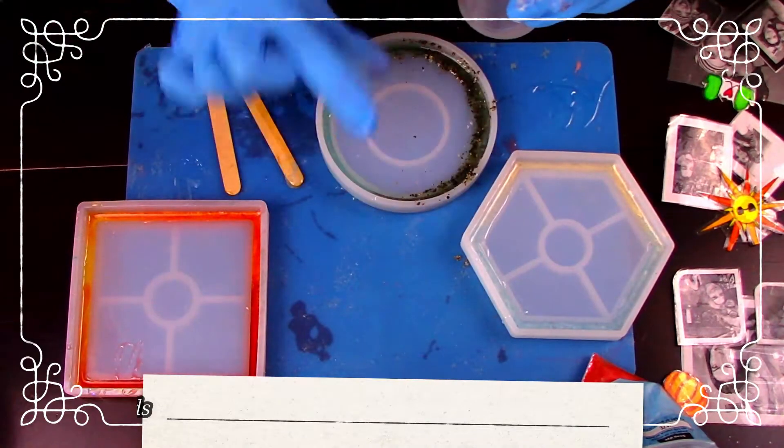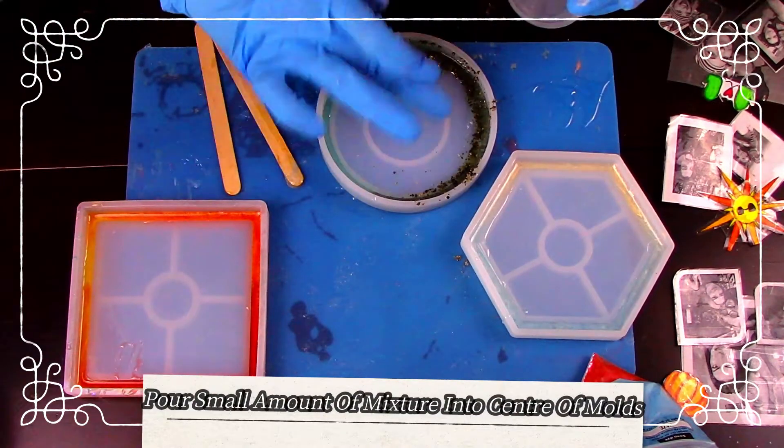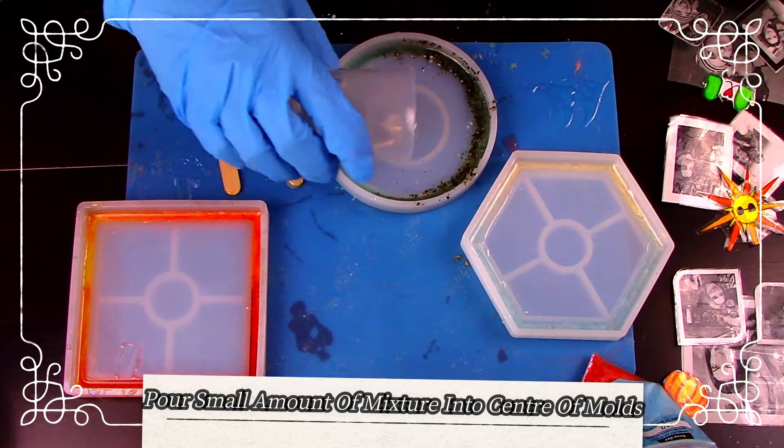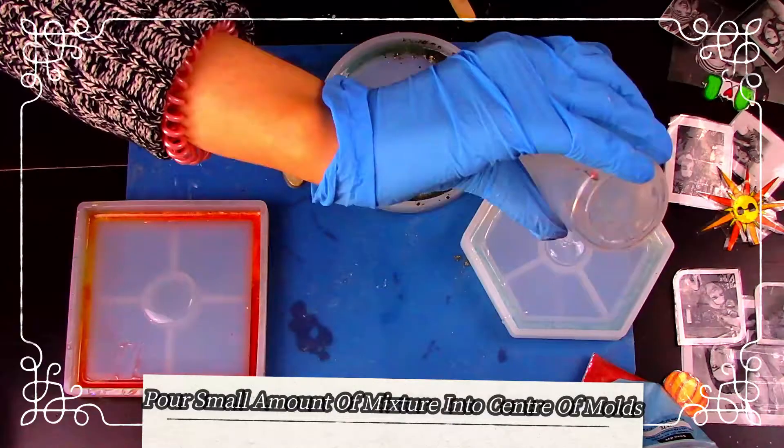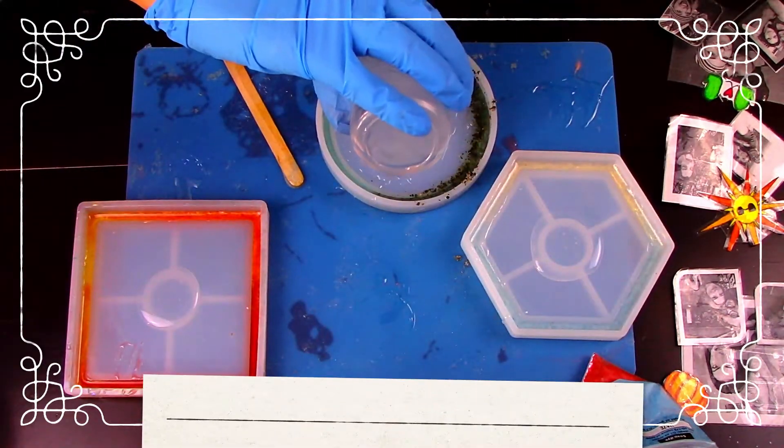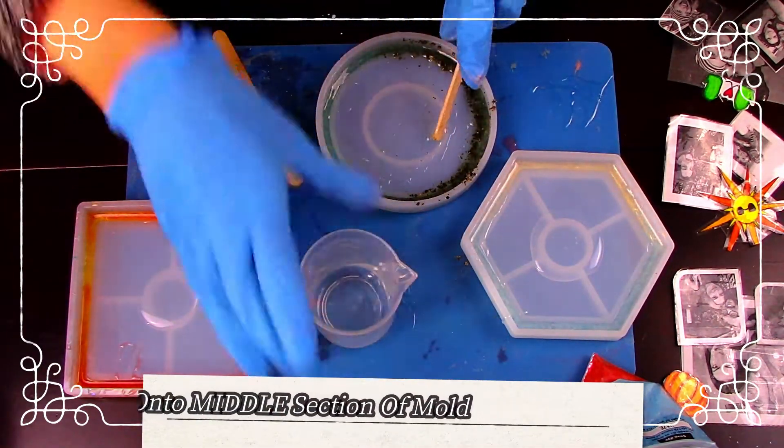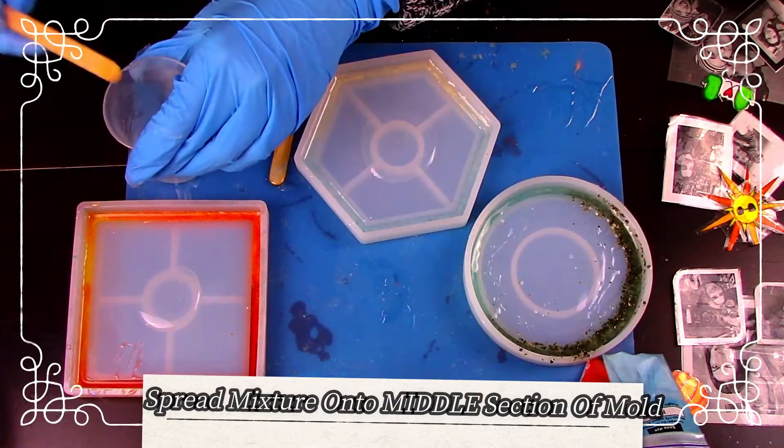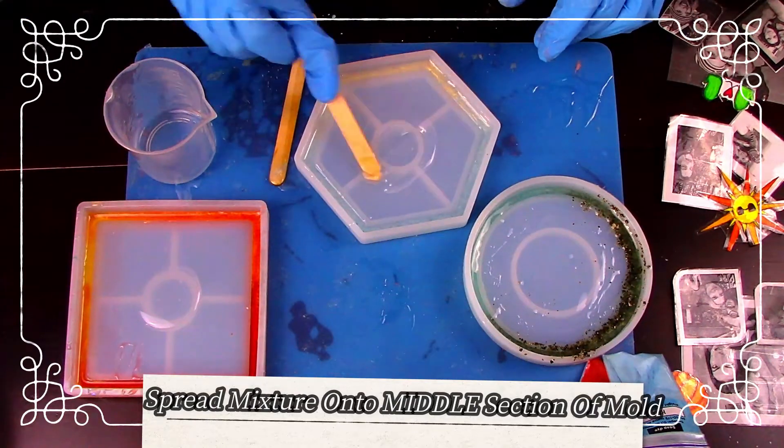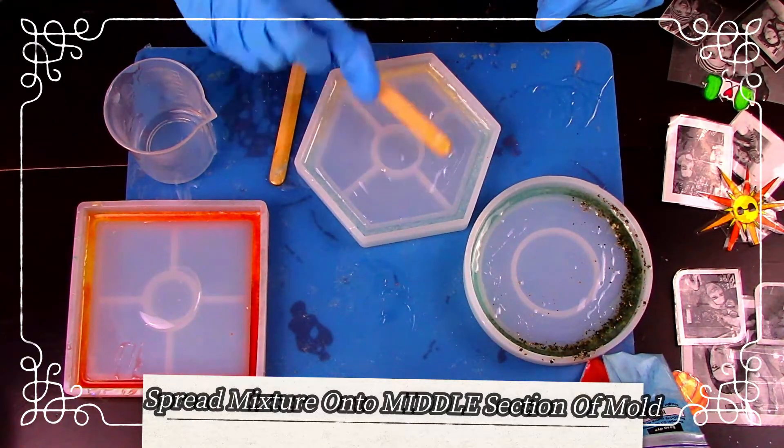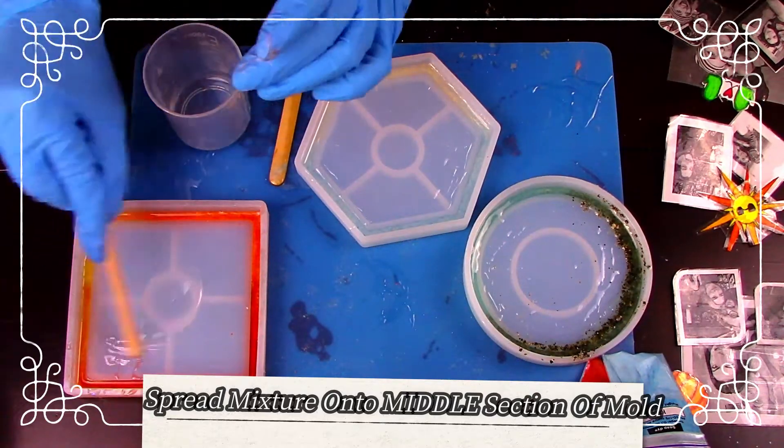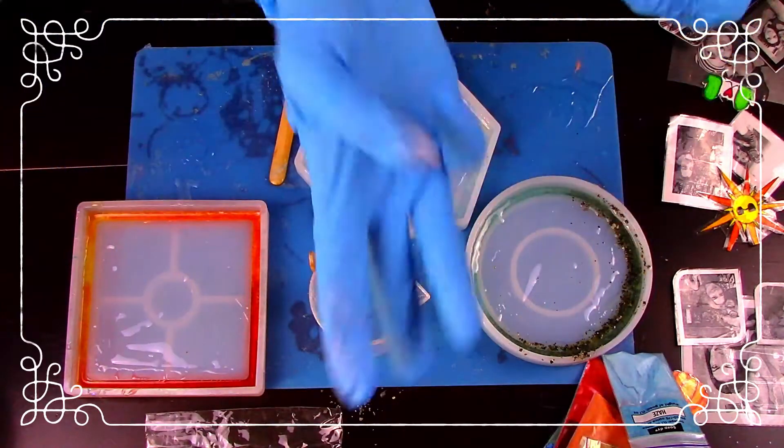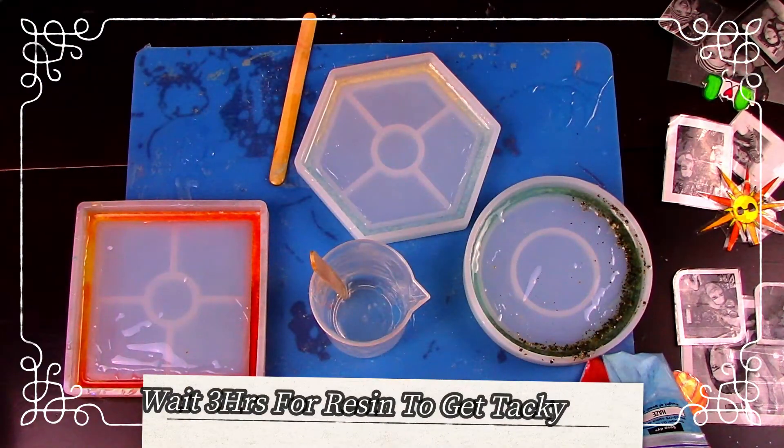Here is the last step before we set these aside for a few hours. All you have to do is pour a little bit of resin into each center of each mold. Once your resin is poured in the center of each mold, take a popsicle stick and spread it around the middle, making sure not to mix the colors on the side with the clear that's in the center. Now it's just a matter of waiting three more hours for the resin to get tacky.